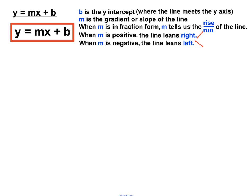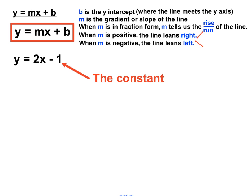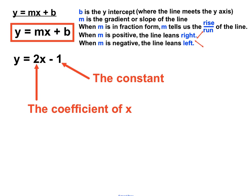From this example, we have an m value of 2 and a b value of minus 1. That number tacked on the end is called the constant — the constant in this line equation is minus 1. It's called a constant because there are no x's in that value; it's always minus 1, so it has a constant value. The number in front of x is called the coefficient of x — a technical mathematical term for a number in front of a letter.